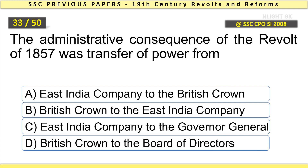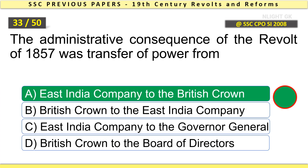The administrative consequence of the revolt of 1857 was the transfer of power from the East India Company to the British Crown.